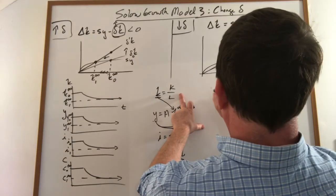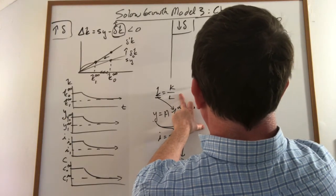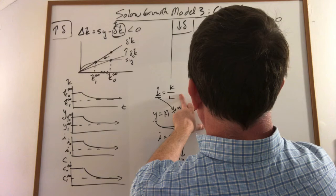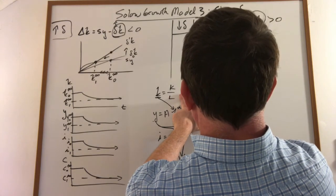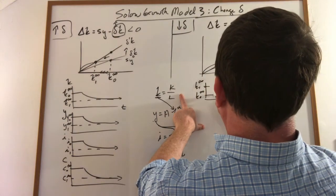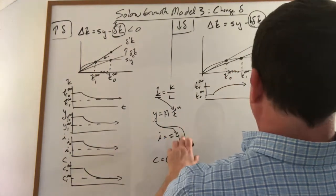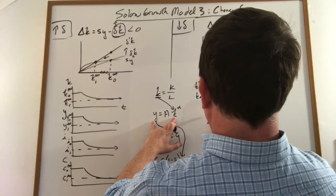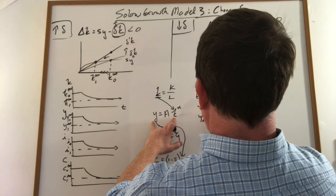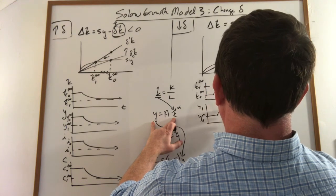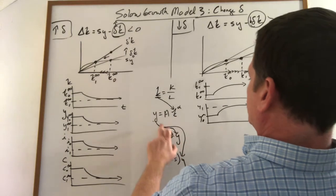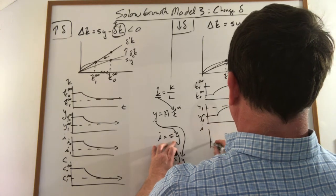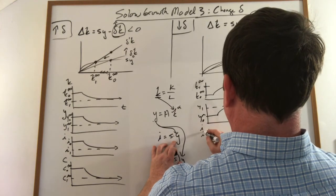Using this here, we can trace out the effects over time. We have an initial capital stock and we rise up to a new one like this. Since we know capital, we know what happens to output. It also rises to our new steady state level. Since we know what happens to output, we know what happens to investment. It also rises to its new steady state level, and we know what happens to consumption.